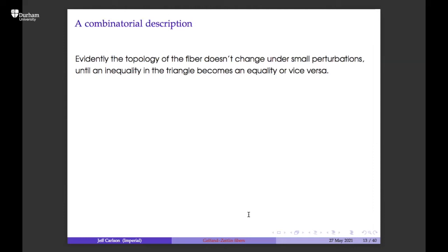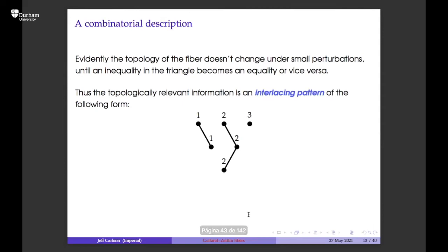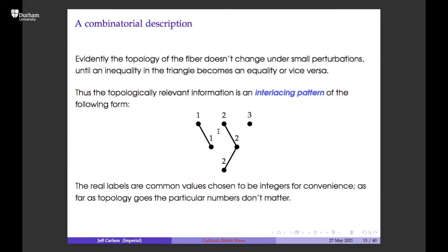If you keep lopping off you get more eigenvalues satisfying these triangles, and although these are reals rather than integers, we have this triangle. The topology of the fiber doesn't really change if you change the lambdas a little — it changes if a strict inequality becomes an equality or vice versa, which corresponds to passing to a face in the base polytope. The relevant information is concentrated in a picture that has lines drawn wherever there's an equality.